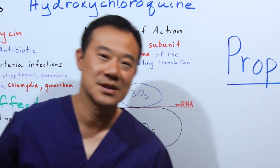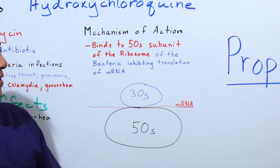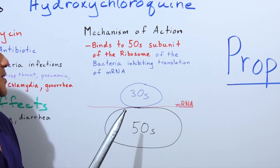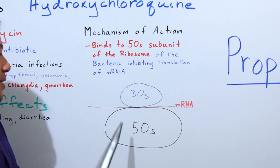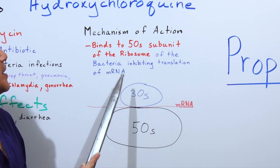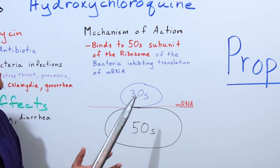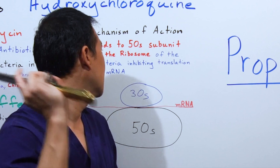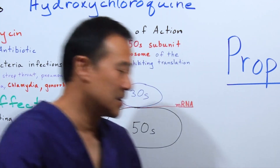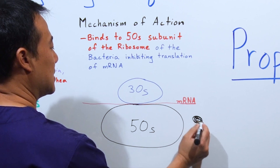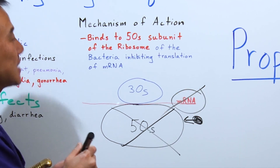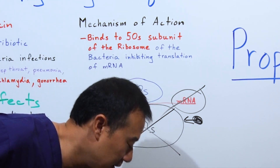The mechanism of action — how does this antibiotic work? It binds to the 50S subunit of the ribosome. The ribosome of a bacteria is made up of two subunits: a 30S subunit and a 50S subunit. These two subunits create mRNA. So if azithromycin inhibits the ribosome by binding to the 50S subunit, it prevents the ribosome from working, and therefore prevents mRNA from being created. That's how the antibiotic azithromycin works.